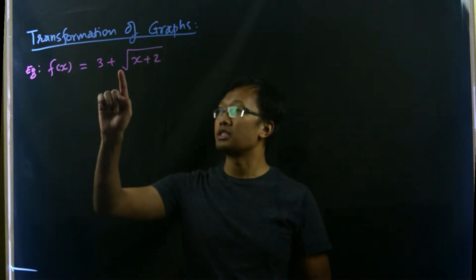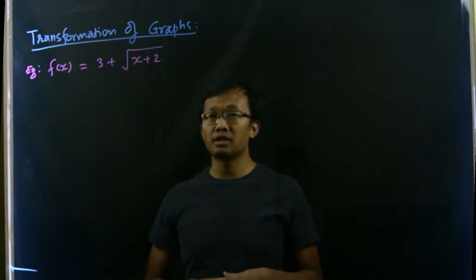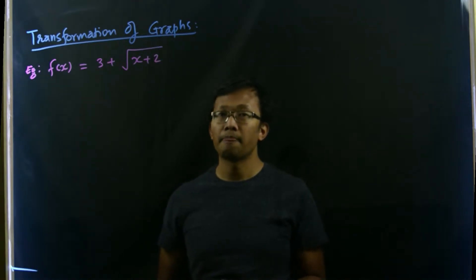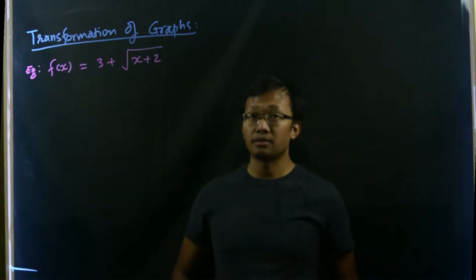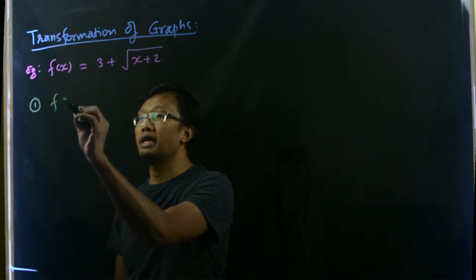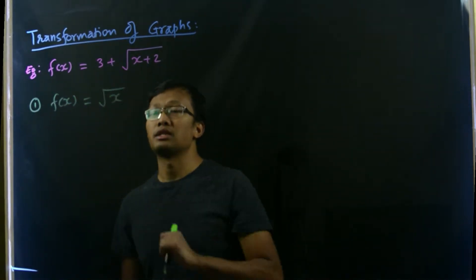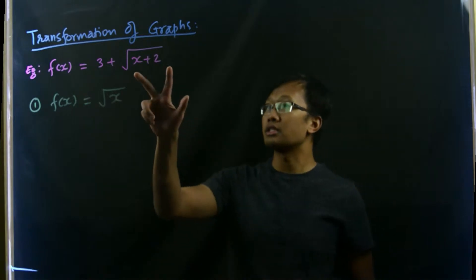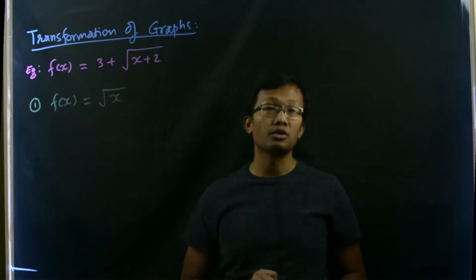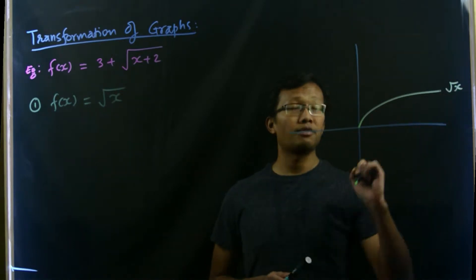f(x) equals 3 plus square root of x plus 2. This is a combination of a parent function and some constants. The parent function is simply f(x) equals root x, since the main expression in this function is root of x plus 2. So root x is the parent function.